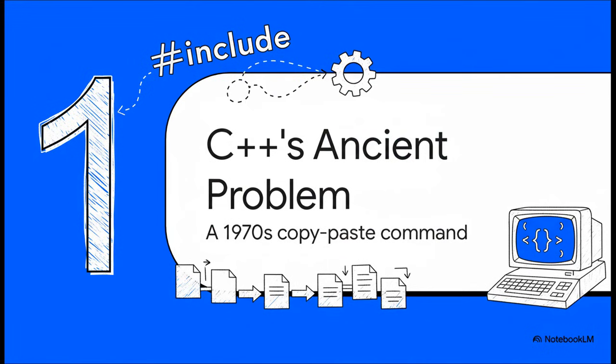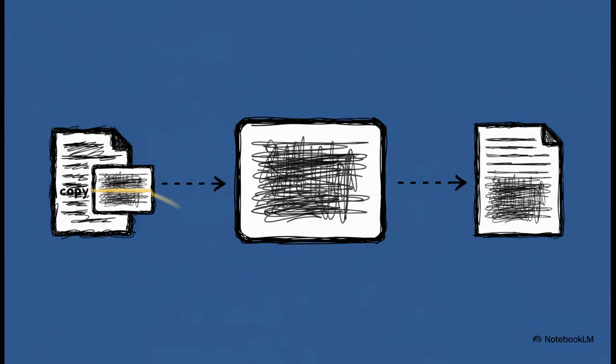Okay, so how on earth did we get here? Well, the root of this entire massive problem is actually, almost shockingly, simple. It goes all the way back to the C preprocessor and a single command that every developer knows like the back of their hand. Pound include. And that's literally it. That's all it does. It's not smart. It has no idea what your code means. It just finds a file and copy-pastes its entire contents right into your source code.